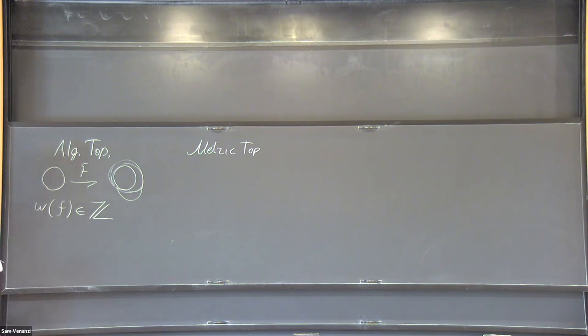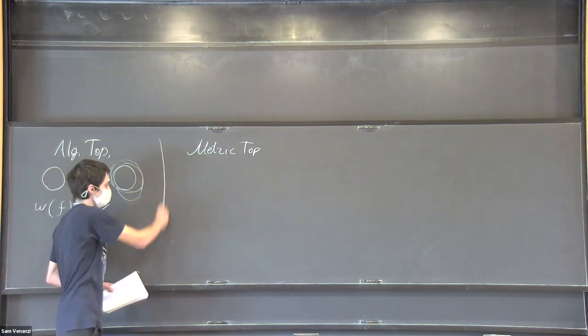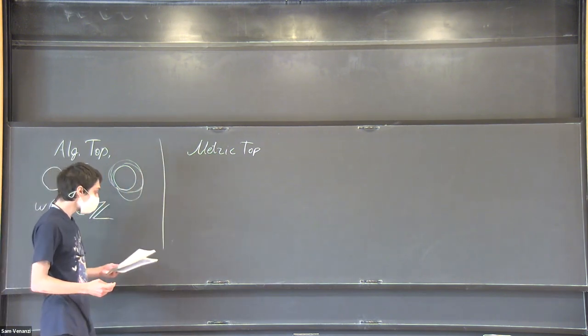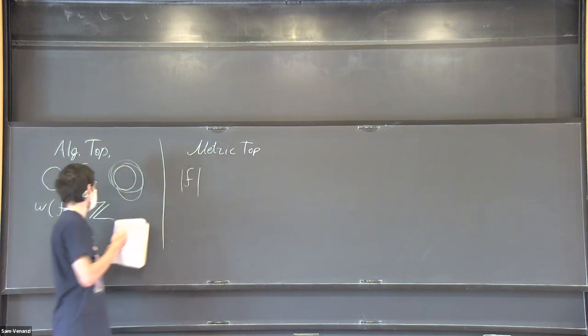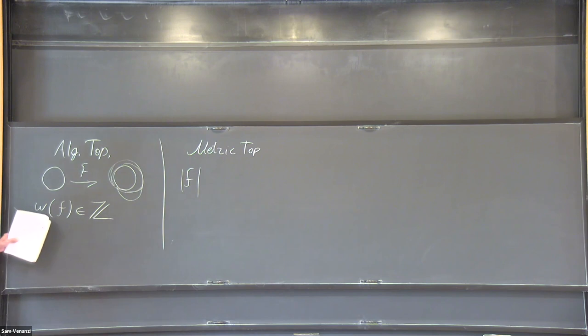But a metric person would also look at the metric naturally and say that's not the only kind of information about f that is some sort of size of f.